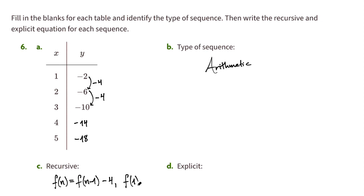f(1) is negative 2, our starting value. And for our explicit equation, we see that with an arithmetic sequence we know that we can get any term by taking the first value negative 2, and we're going to be subtracting 4 a certain number of times, so minus 4 times something.